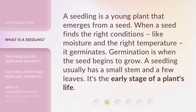A seedling is a young plant that emerges from a seed. When a seed finds the right conditions, like moisture and the right temperature, it germinates. Germination is when the seed begins to grow. A seedling usually has a small stem and a few leaves. It's the early stage of a plant's life.